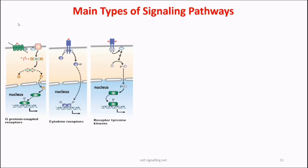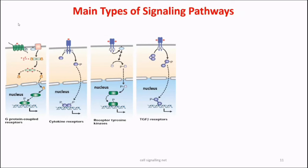The fourth type is the TGF-beta pathway, where the signal binds with a receptor that also has intrinsic kinase activity. The major difference between RTK and TGF-beta is that in RTK, the kinase phosphorylates specific tyrosine amino acid residues of target proteins, whereas TGF-beta receptors phosphorylate on serine or threonine residues. In the TGF-beta pathway, the proteins involved are known as SMAD proteins, which on phosphorylation are activated. Activated SMAD proteins form a complex with other SMAD proteins, translocate into the nucleus, and initiate transcription of specific genes.